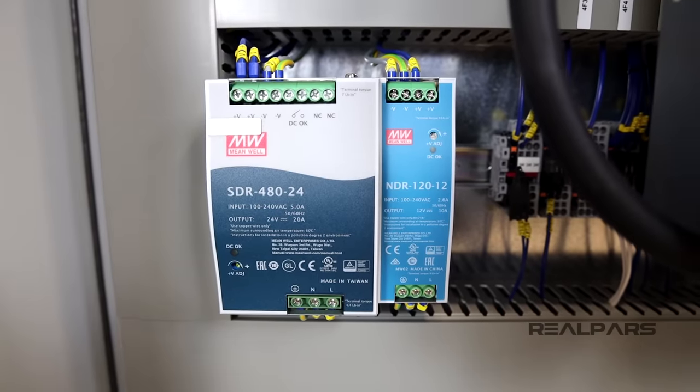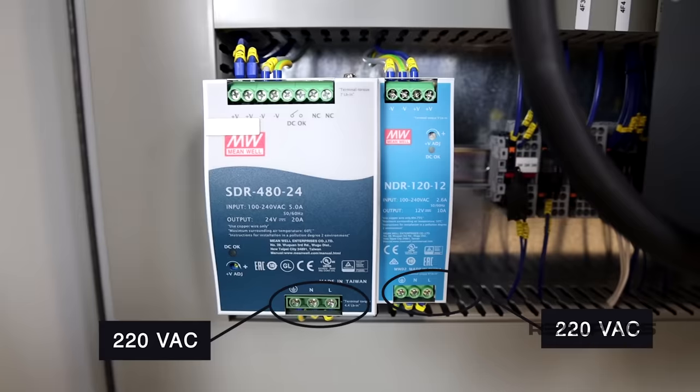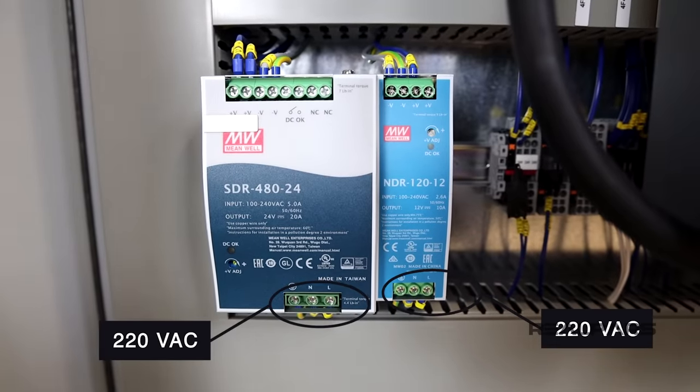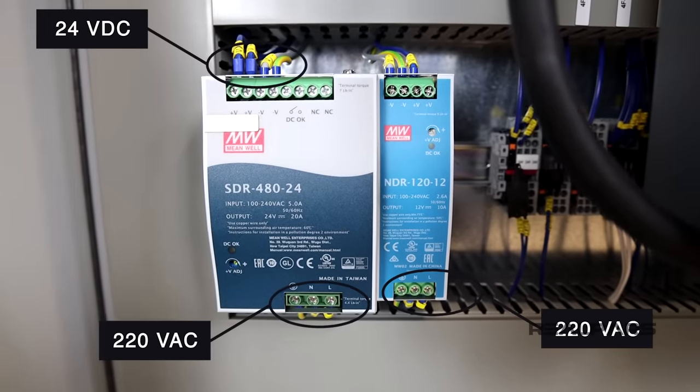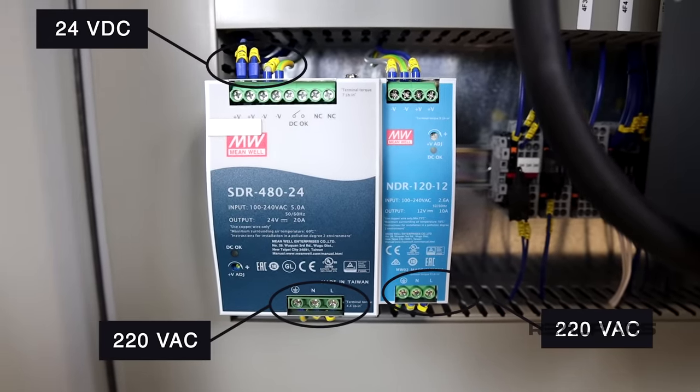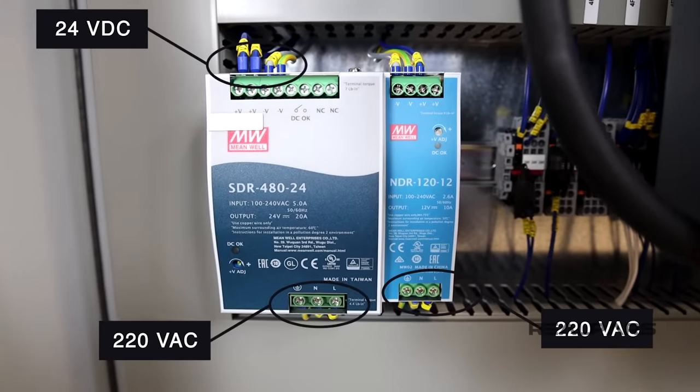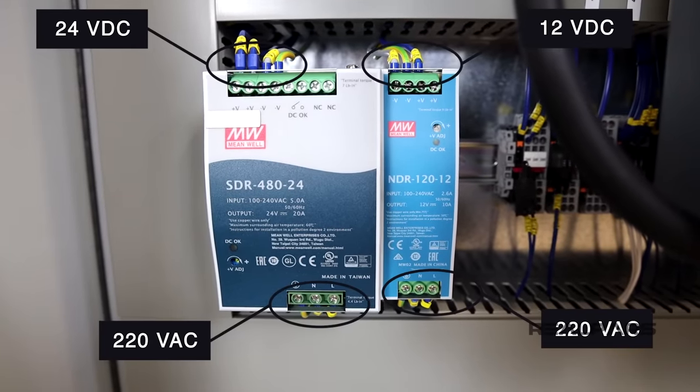Both of these power supplies receive 220V AC as input. This bigger one gives you 24V DC in the output here, and the smaller one gives you 12V DC on the output.